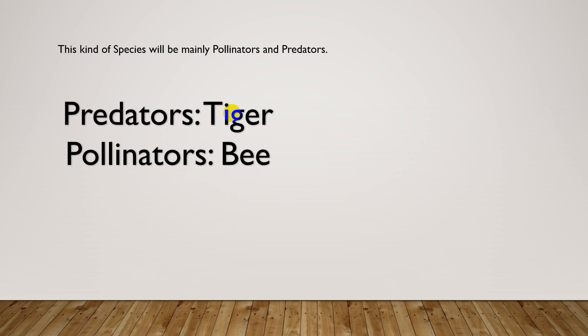Another example of a keystone species that is a pollinator is the bee. In the absence of bees, plants are affected and the whole ecosystem is disturbed. The agent for pollination is absent, resulting in no pollination, which disrupts the balance in the ecosystem.